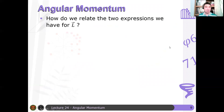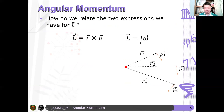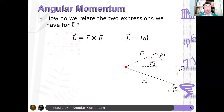How do we relate the two expressions we have for L vector? Remember, we have two definitions: r cross p and Iω. The question is, are they equivalent? When you check the units, they're equivalent. There is a way to show this equivalence. What I will show here is just the heuristic way of showing that they are equivalent. We'll split the proof into two parts: first, we'll check that the magnitudes are equal; and second, we'll check that the directions of the two angular momentum expressions are also the same.